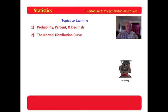50% lies on each side of the mean. 0.500 lies on each side of the mean. Hope you're getting some idea of where we're headed. So we will look at probability, percent, and decimals. We will examine the normal distribution curve.